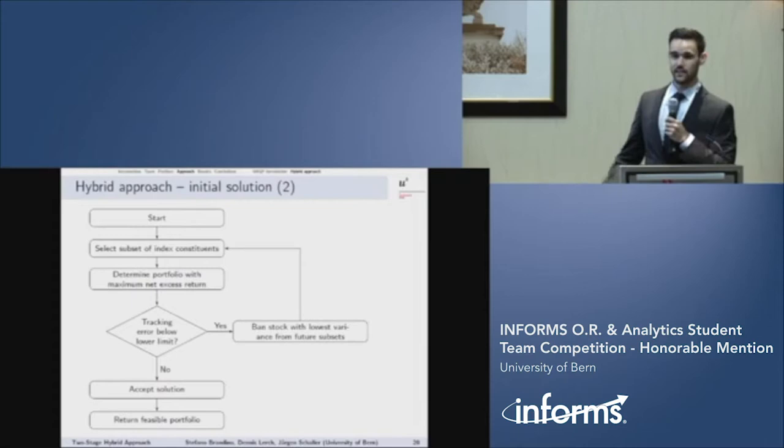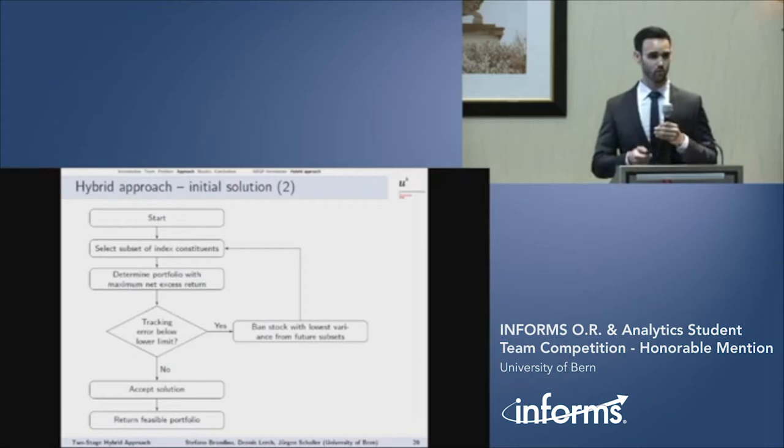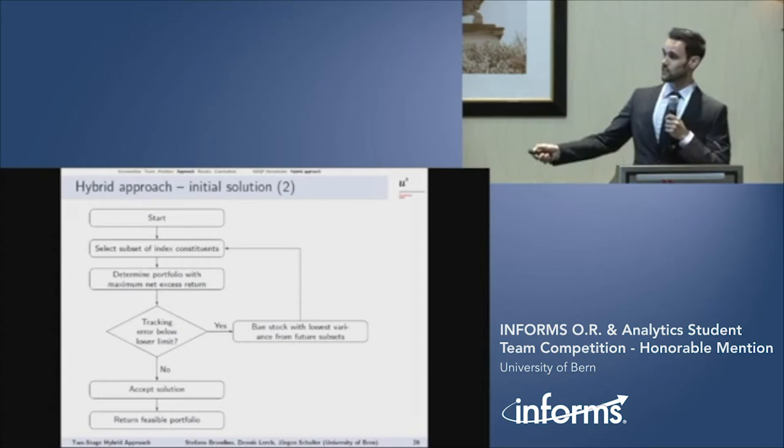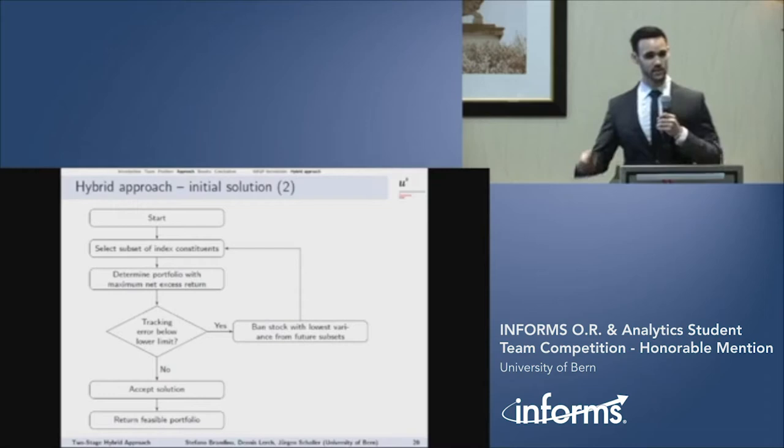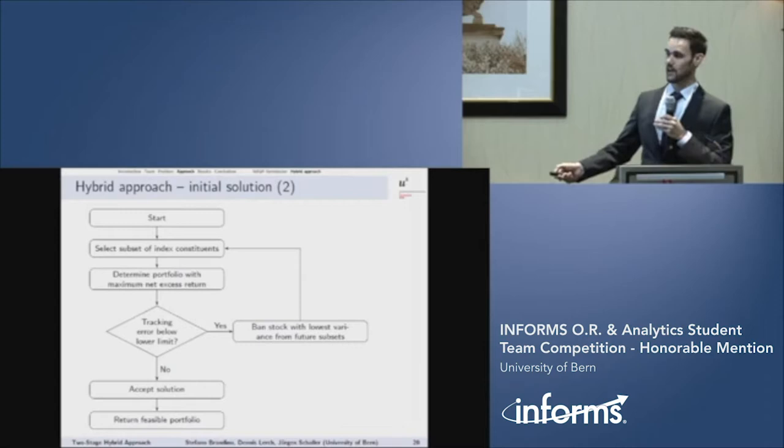If the tracking error is below the lower limit, the algorithm bans the stock with the lowest variance from future subset. With that, we want to increase the chance to get a higher tracking error than the lower bound. And repeating all the steps, we finally get a portfolio which has a tracking error higher than the lower bound. So the algorithm accepts it and proceeds to stage two.